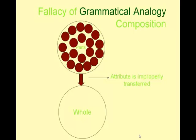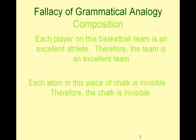Fallacies of grammatical analogy have a syntactical analogy but the meaningful analogy is missing. In composition, we give an attribute to a single part and wrongly transfer that attribute to the whole group. For example: 'Each player on this basketball team is an excellent athlete. Therefore, the team is an excellent team.' Even though the individuals may be excellent, they may not have good teamwork, which could be the downfall of the team. Another example: 'Each atom in this piece of chalk is invisible. Therefore, the chalk is invisible.'